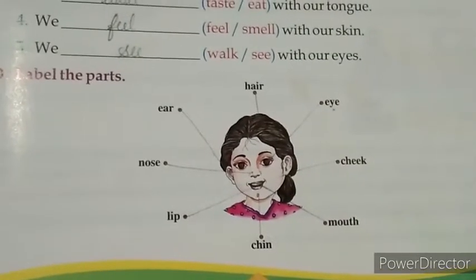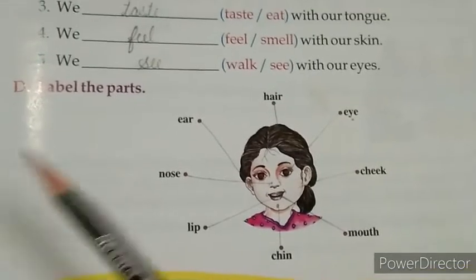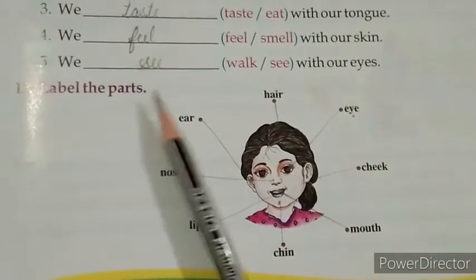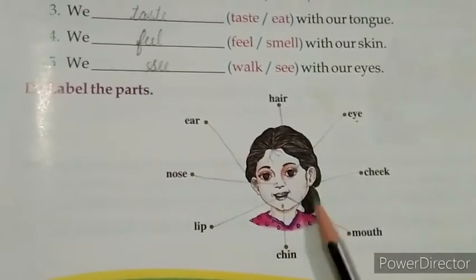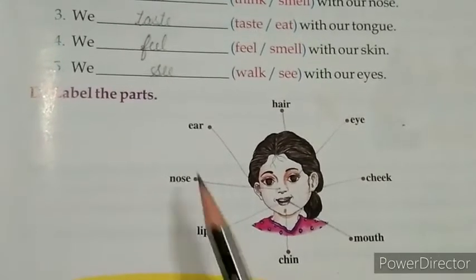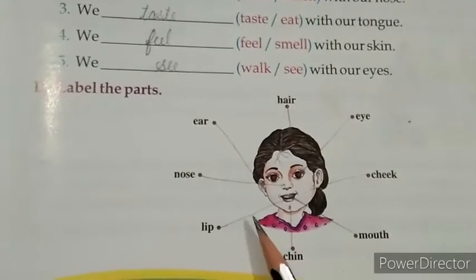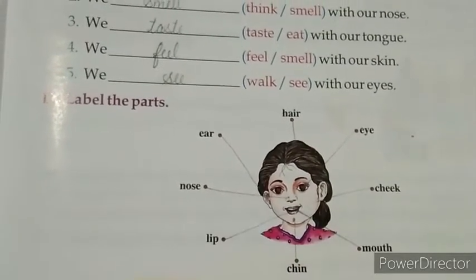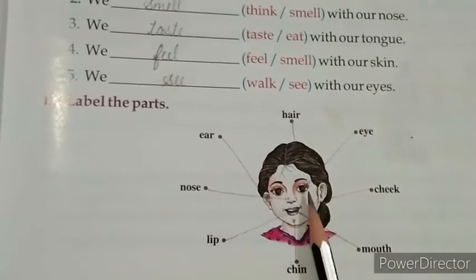Now students, move forward. Here we have the next question. Question D: Label the parts. Here we have a picture and some body parts names. In this question we have to match the body parts names with their organs in the picture.